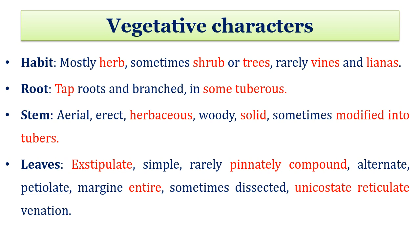Now let's discuss the vegetative characters for Family Solanaceae. The habit is mostly herb, sometimes shrub or tree, and rarely vines and lianas. Being a dicot, the root shows a tap root system, and in some members tuberous roots are also present. Stem is aerial, erect, herbaceous, woody, and solid — solid meaning not hollow. Sometimes stem is also modified into tubers. Leaves are exstipulate, simple — meaning directly borne on stem — and rarely pinnately compound. Phyllotaxy is alternate. Leaf margin is entire but sometimes dissected, and venation is reticulate-unicostate.